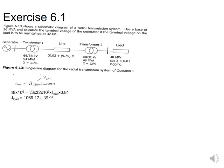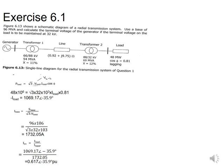We calculate the current utilizing the power given on the load side. Once we have that current, we calculate our base current, which leads us to calculate the per unit current — which is simply our load current divided by our base current. In this case we get 0.17 at minus 35.9 degrees as the answer.